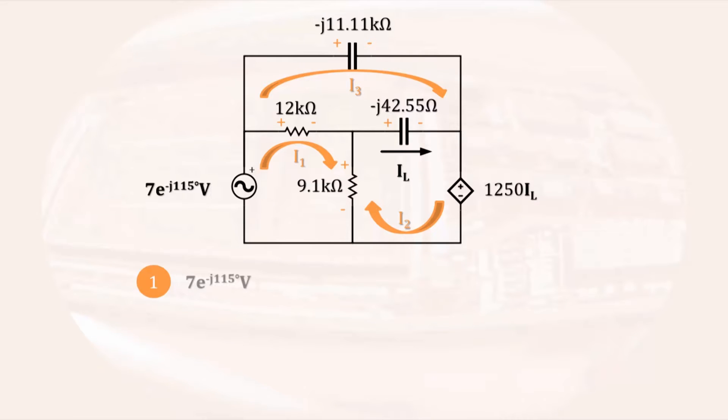Starting in the lower left-hand corner of loop 1, we have a voltage increase equal to the voltage source, and a drop in voltage equal to 12 kiloohms times I1 minus I3, because the current I1 agrees with the passive sign convention. A decrease in voltage of 9.1 kiloohms times I1 minus I2, and that completes our loop, so the equation must equal zero.